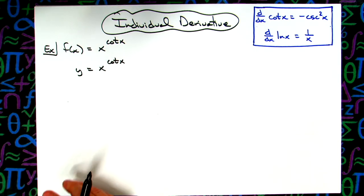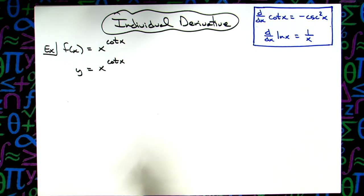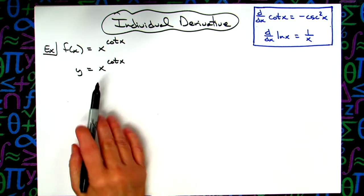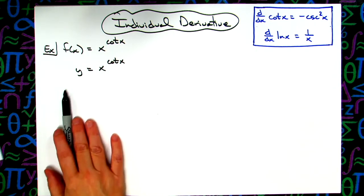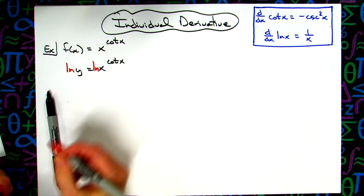Now I want to do a little bit of log rules here to simplify this to make that logarithmic differentiation work really nice for us. So what we're going to do is take the natural log of both sides.